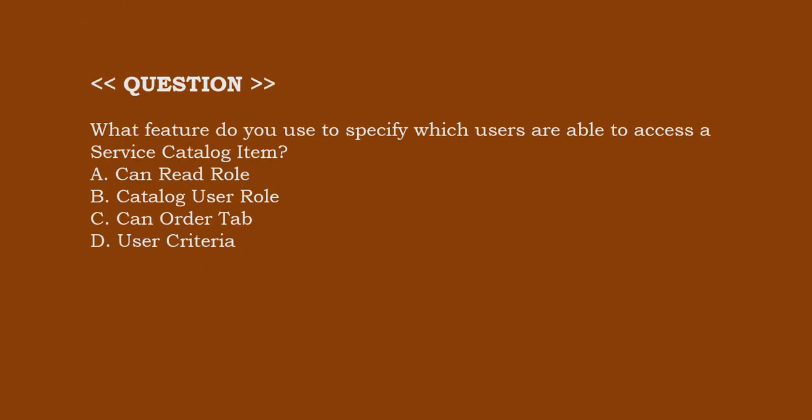Next question. What feature do you use to specify which users are able to access a service catalog item? Option A, Can Read Role. Option B, Catalog User Role. Option C, Can Order Tab. Option D, User Criteria.